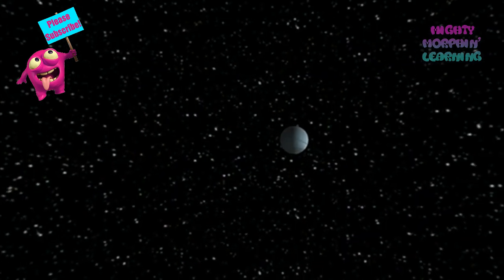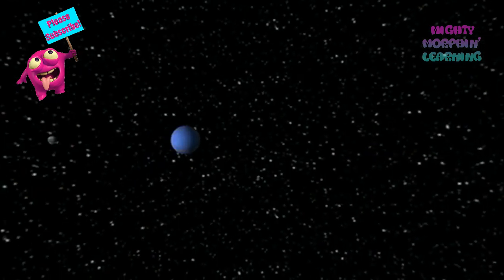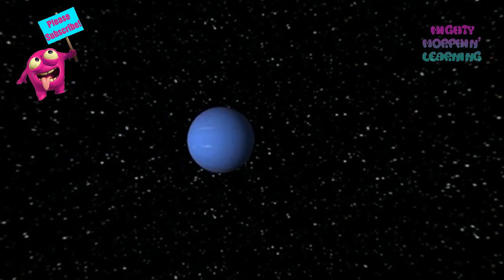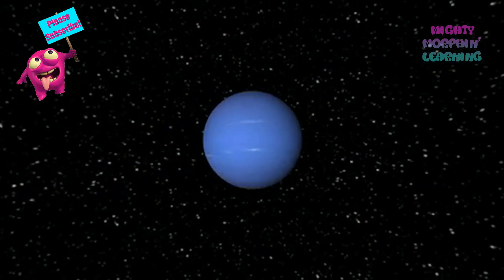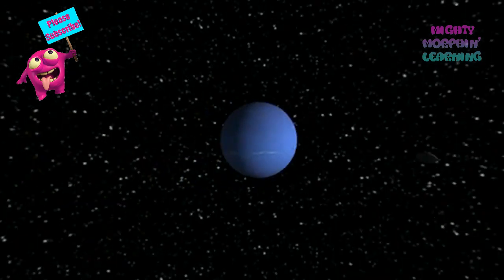The next planet is Neptune, which has the fastest winds in the solar system, blowing at around 1,200 miles per hour. One Neptune year is equal to around 165 Earth years.